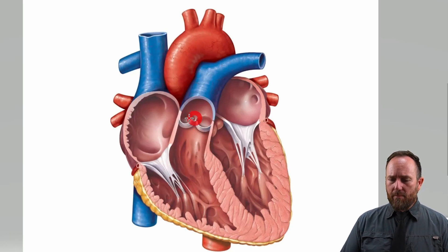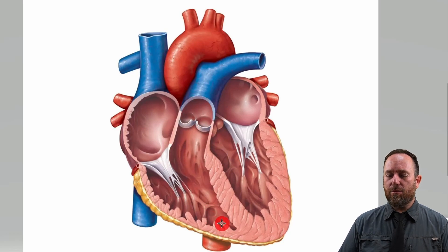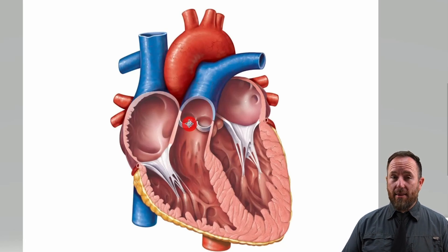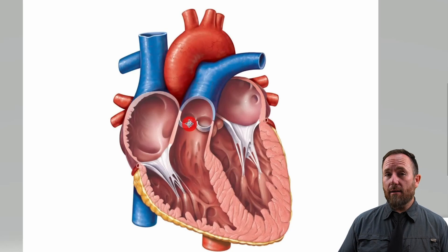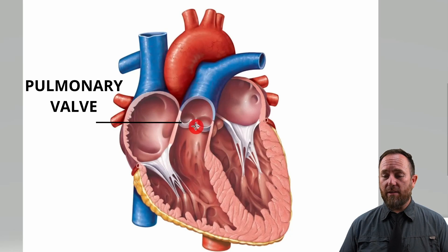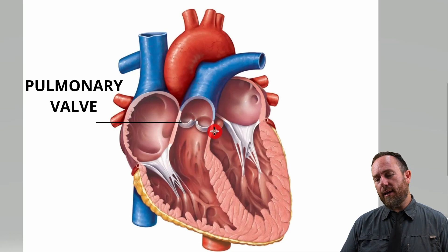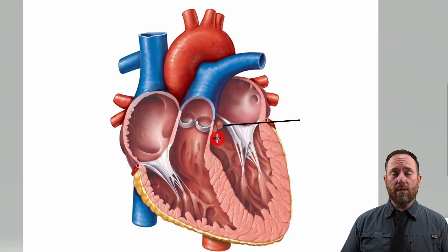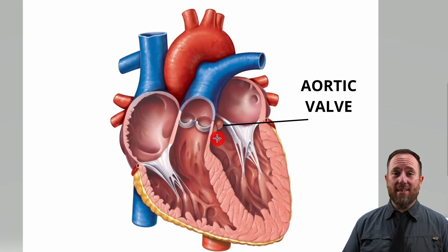The last two valves: one is the one-way valve that lets blood flow from the ventricle out into the pulmonary artery. And then the valve that controls blood flowing from the ventricle out into the aorta — as simple as that, it is the aortic valve.